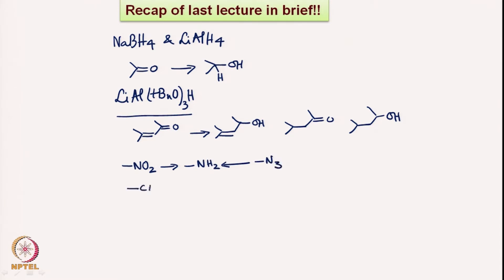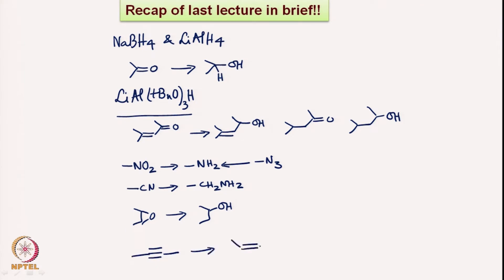The cyanide can be converted to the corresponding primary amine. Epoxides can be converted to the corresponding alcohols, and we discussed various steric aspects of epoxides. Of course we can also convert to the corresponding trans alkene. These are the various things that we discussed last time.